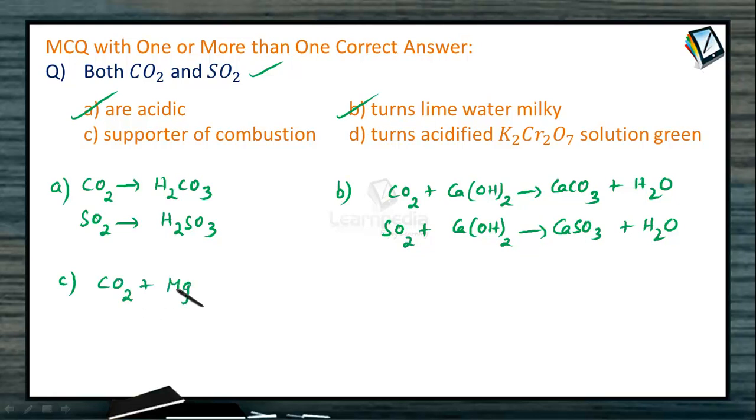Because when we take magnesium, this magnesium continuously burns in the atmosphere of carbon dioxide and that gives magnesium oxide and carbon. Of course, this is the balanced equation.